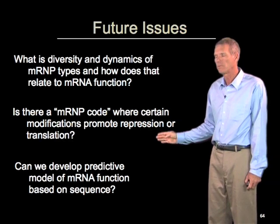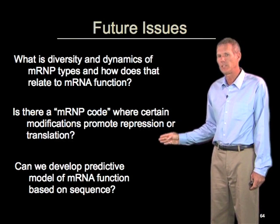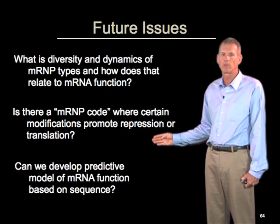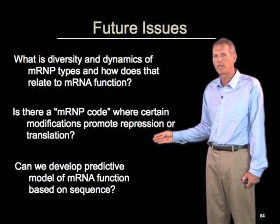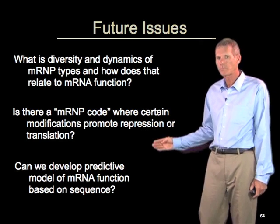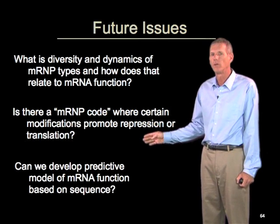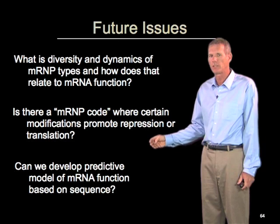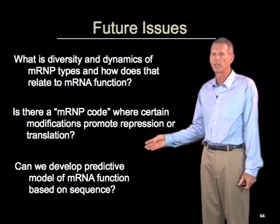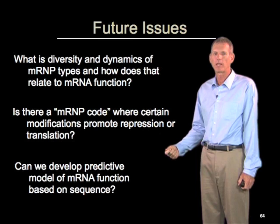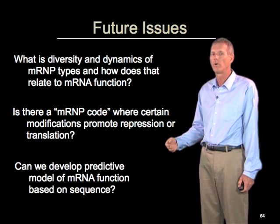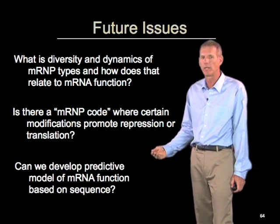We also don't understand these modifications. Analogous to DNA, there is an idea of a histone code where different modifications to chromatin influence whether the DNA is available or inaccessible for transcription. Is there a corresponding code for mRNAs where different types of modifications on mRNA binding proteins drive RNAs into repressed states or translation states, and therefore regulation of those modifications becomes an important control point for regulating either the general level of translation or the translation of specific mRNAs within the cell?